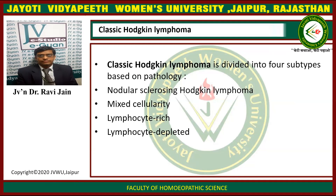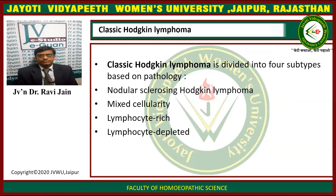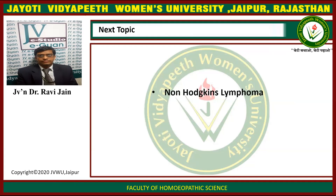Classical Hodgkin's lymphoma is divided into four subtypes based on pathology: nodular sclerosis Hodgkin's lymphoma, mixed-cellularity Hodgkin's lymphoma, lymphocyte-rich, and lymphocyte-depleted. This concludes the discussion on Hodgkin's lymphoma.